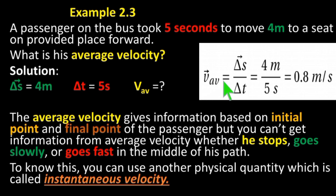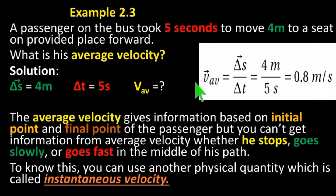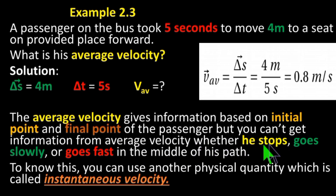Average velocity is equal to change in displacement over change in time: four meters divided by five seconds equals 0.8 meters per second. The average velocity gives information based on the initial point and the final point of the passenger.